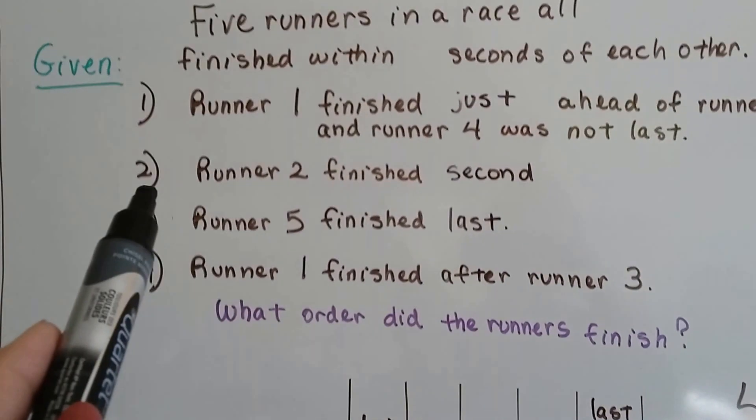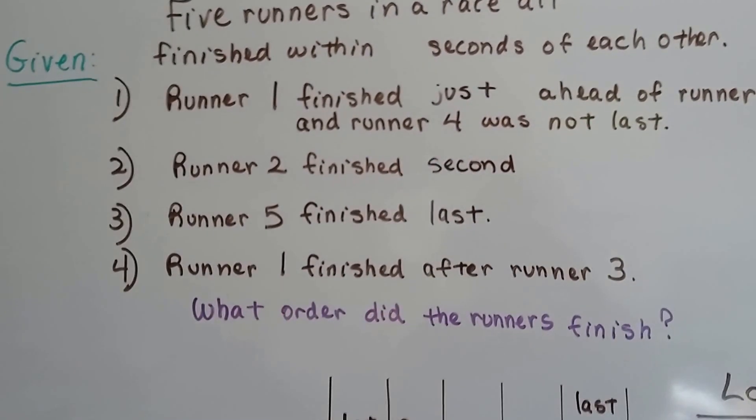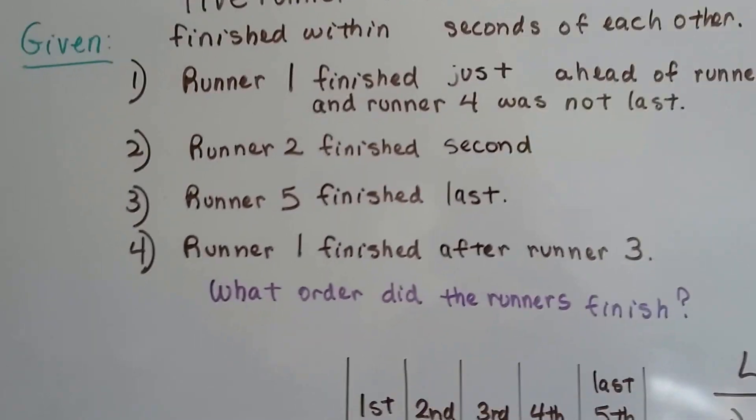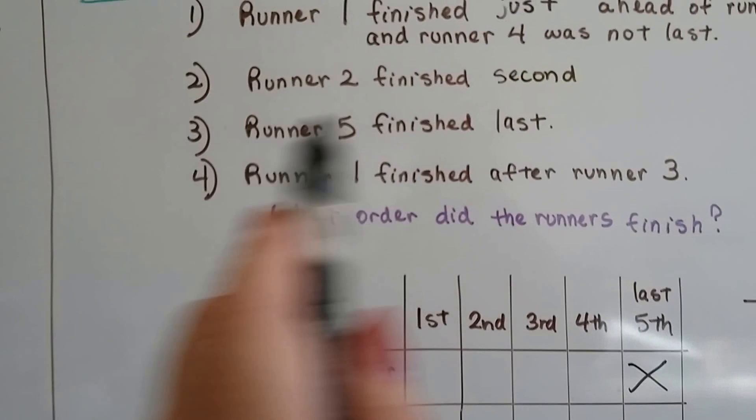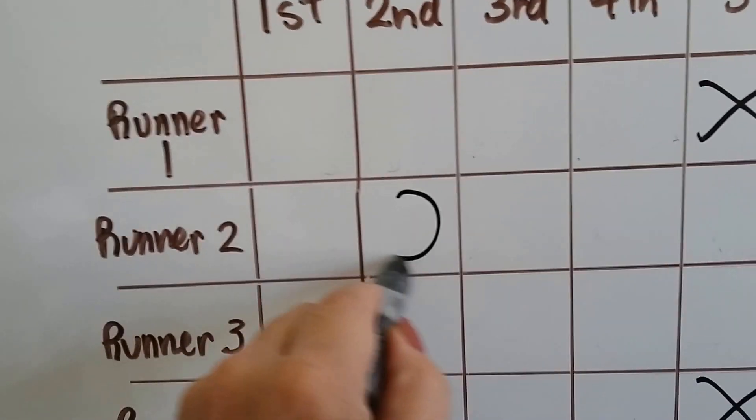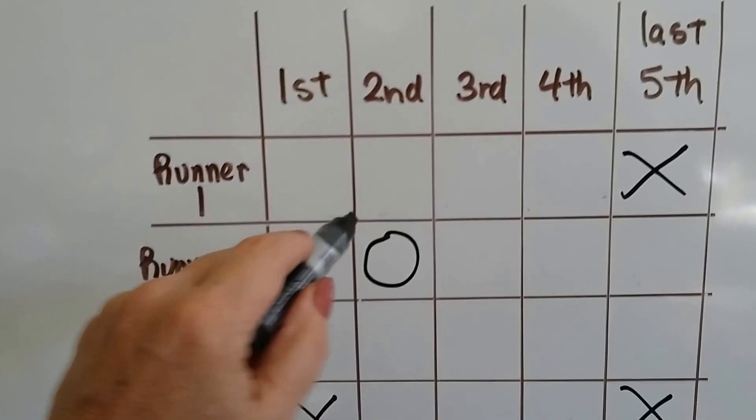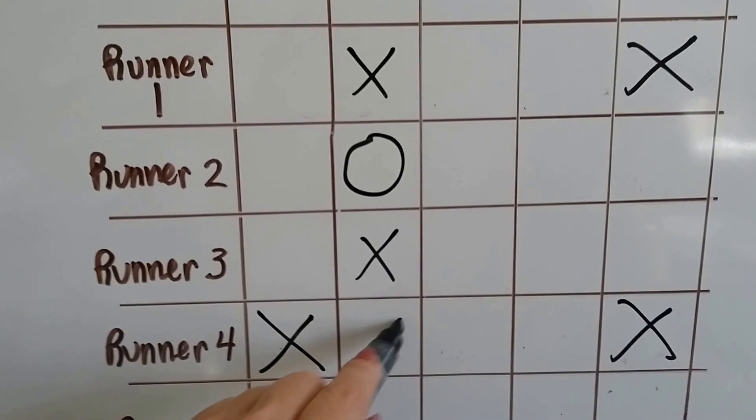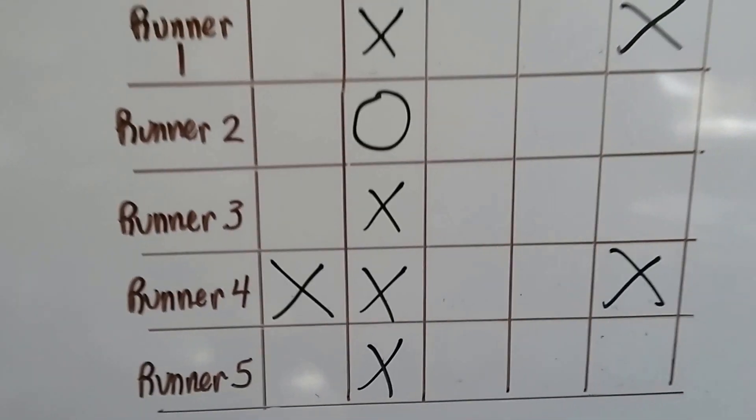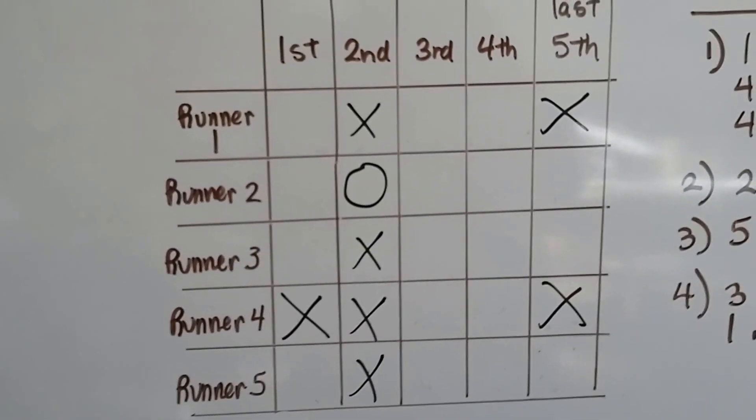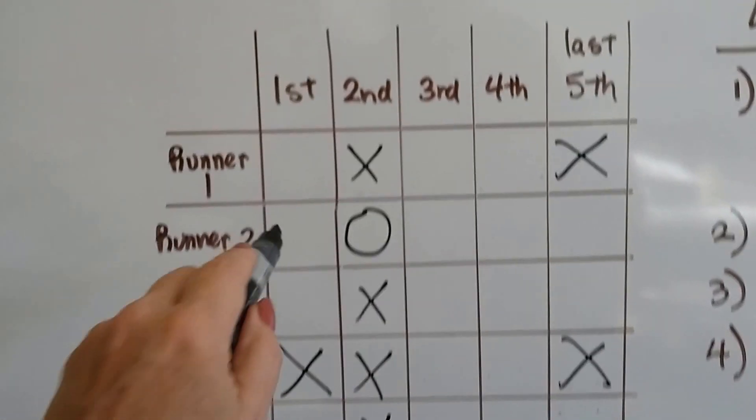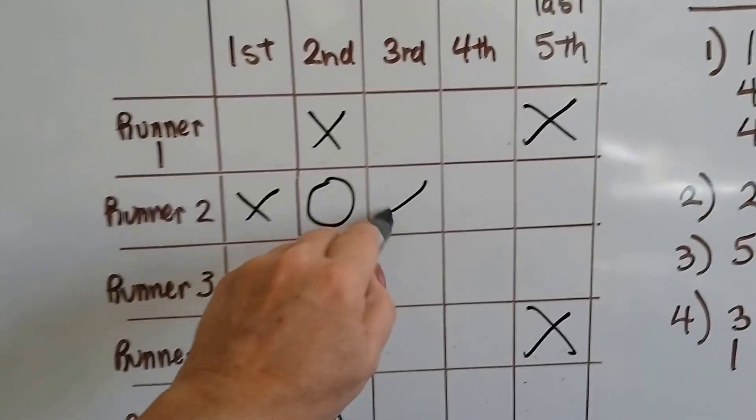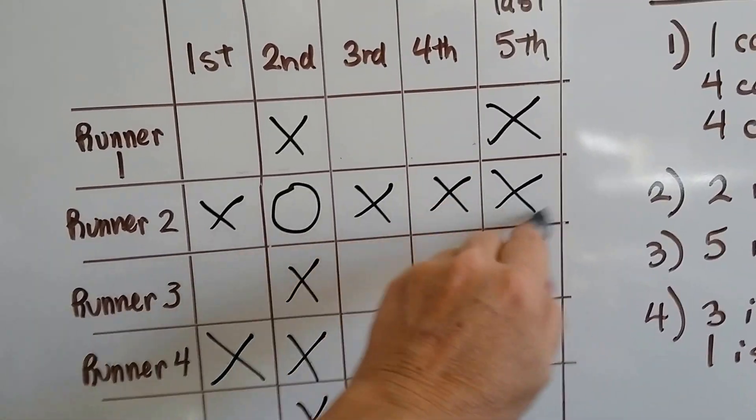Just from the first clue, we know that number one can't be last and number four can't be first. Number four can't be first if somebody was in front of him. It says runner number one finished ahead of him. So runner number four cannot be first place. Somebody finished ahead of him. So we know for first place, runner number four can't fit. Let's look at the next one. The next given clue is that runner two finished second. Well, they just gave that one to us. That is a given. So runner number two finished second.